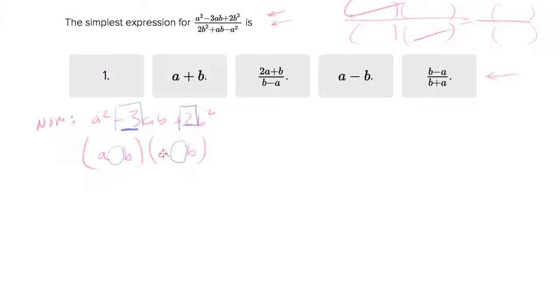So what two numbers, when you multiply them together, give you two. And when you add them together, give you negative three.